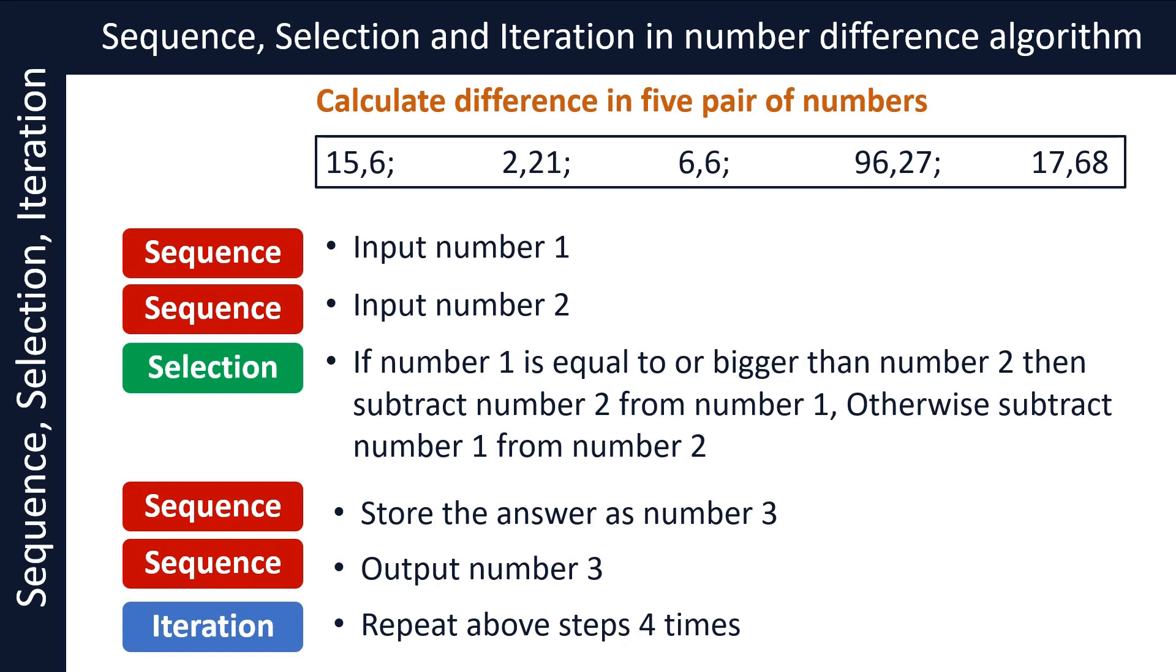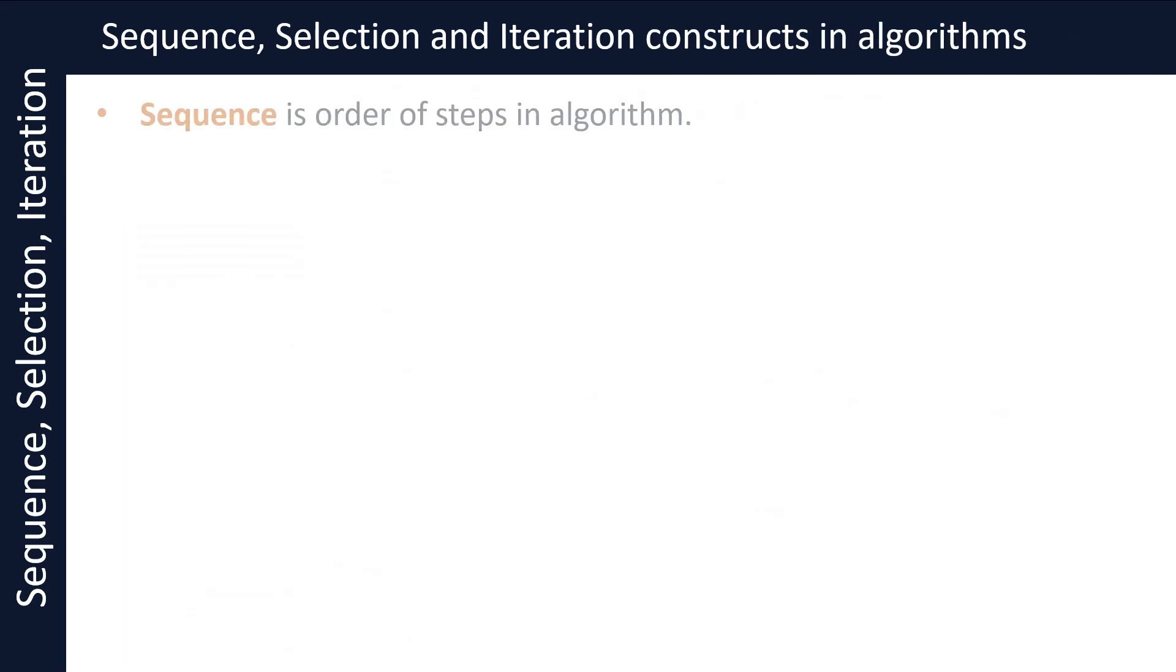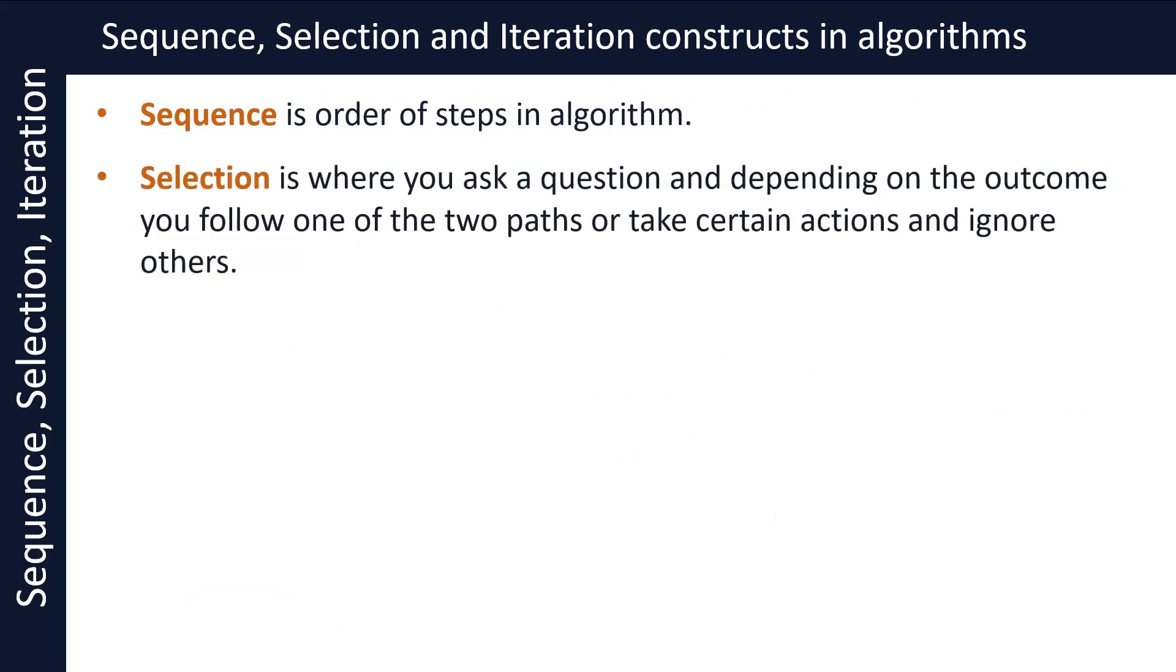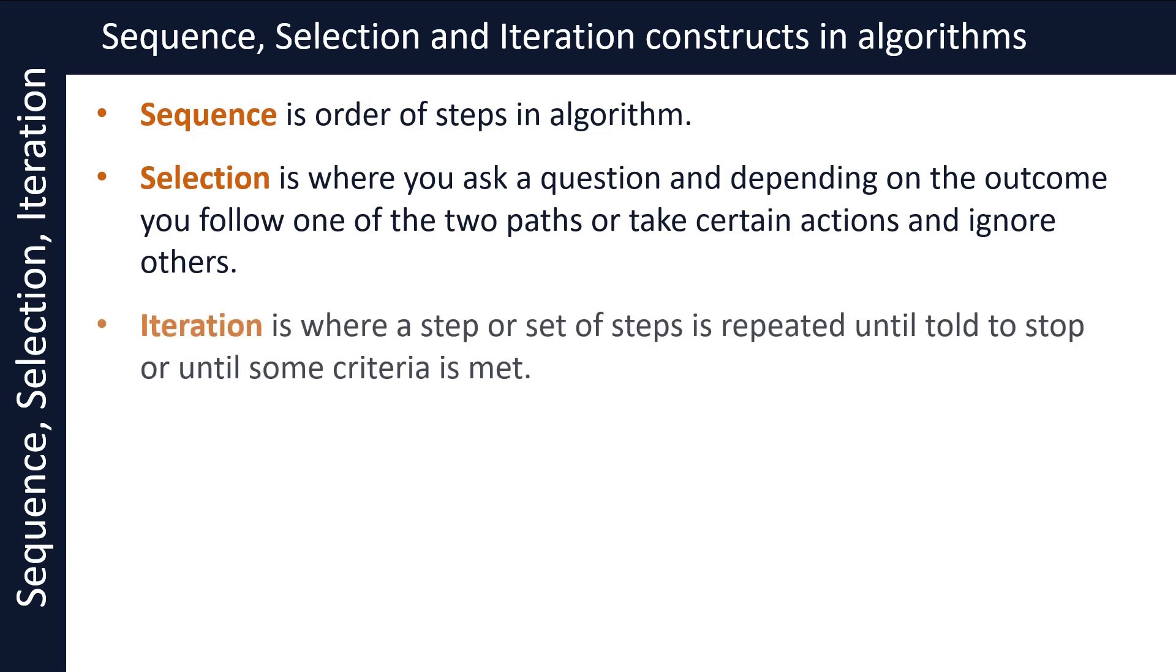Let's recap. Sequence is the order of steps in an algorithm. Selection is where you ask a question and depending on the outcome you follow one of the two paths or take certain actions and ignore others. Iteration is where a step or set of steps is repeated until told to stop or until some criteria is met.